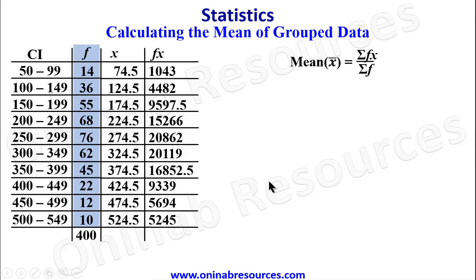Also we go to the column for fx and sum up the values using our calculator. So to sum up this we have 1043 added to 4482, and so on. From our calculator we have 108,500. We then substitute into our formula: since sigma fx is 108,500, we have it as 108,500 divided by 400. And if you press the calculator we have 271.25. So that gives the mean distribution of this data.